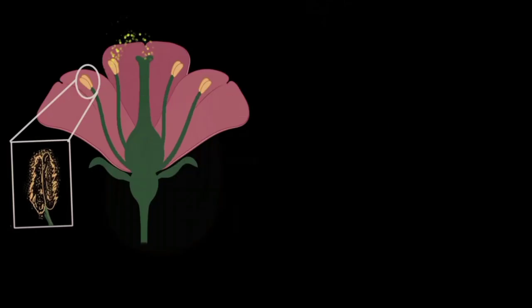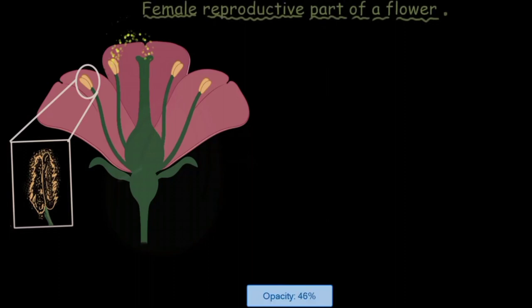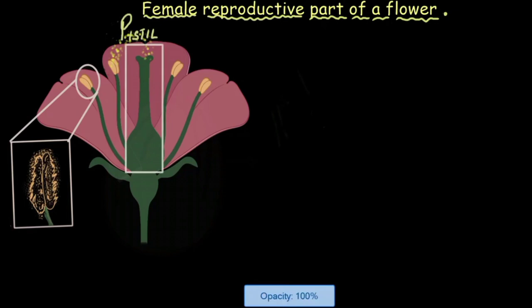In this video we are going to talk in detail about the female reproductive part of a flower and we call that part the pistil.